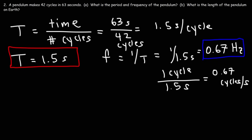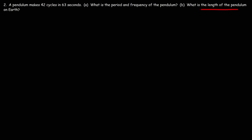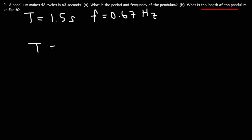The frequency in Hertz tells you the number of cycles occurring every one second. Part B asks for the length of the pendulum on Earth. Starting with T = 2π√(L/G), we know the period and the gravitational acceleration, so we need to isolate L. Squaring both sides gives T² = 4π²(L/G).